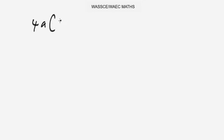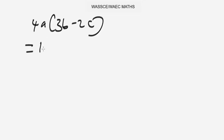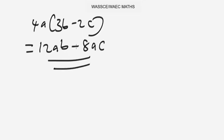Let's begin with problems involving single brackets. Let's say you're given 4a and in brackets you have 3b minus 2c, and you're asked to simplify this expression. This algebraic expression: 4a times 3b equals 12ab, and 4a times minus 2c gives us minus 8ac. That will be the answer — it's as simple as that.